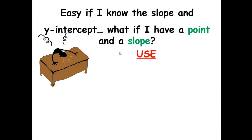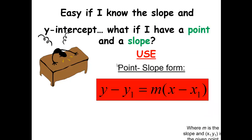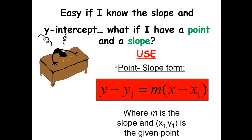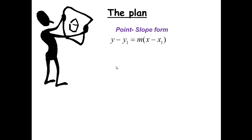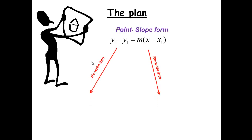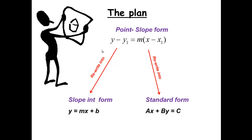Now, what if I have a point and a slope? Then we can use point-slope form, which is y minus y₁ equals m times x minus x₁, where m is the slope and x₁, y₁ is the given point. Once we have the point-slope form, we can write this into slope-intercept form or into standard form.